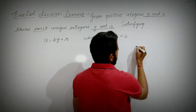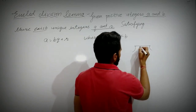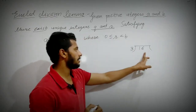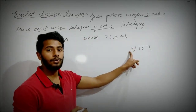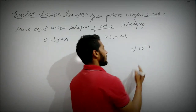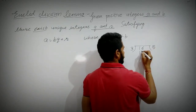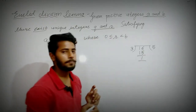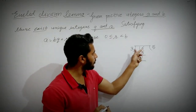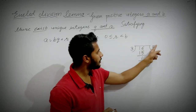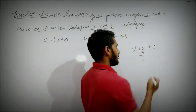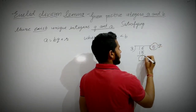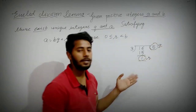Let me take a small example: I am dividing 16 by 3. So obviously the quotient here will be 5, because 3×5 = 15, and the remainder will be 1. So for 16 and 3, when we divide, the quotient is 5 and the remainder is 1.